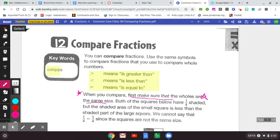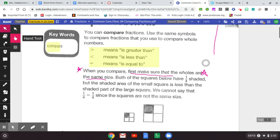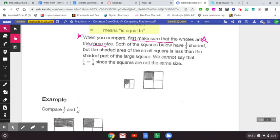So let's take a look at the example now. When you compare, first make sure that the wholes are the same size. Both of these squares below have one-fourth shaded. This has four parts and one part is shaded, so one fourth is shaded here. And this bigger square also has four parts with one part shaded, so we can say one fourth is shaded here too. But look, the area, the shaded area of the small square is much smaller or less shaded than the shaded area of the bigger square. So in this case, one fourth does not equal one fourth because these squares are not the same size. So that's a really really really important understanding.